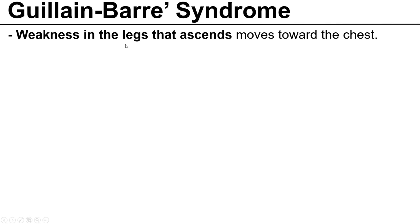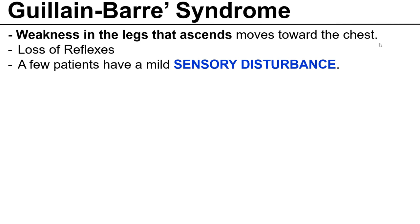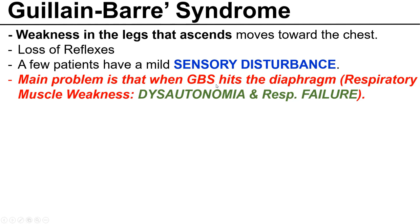Some important facts about Guillain-Barré syndrome: weakness starts in the legs and then moves towards the chest. There are loss of reflexes, and some patients also have sensory disturbances. The main problem is that when GBS hits the diaphragm — it's an ascending problem — there is respiratory muscle weakness leading to respiratory failure. That's the major, major problem, and if this happens the patient is going to die.